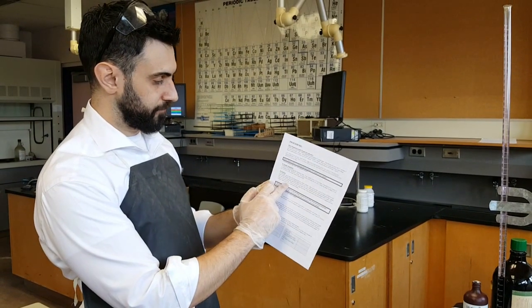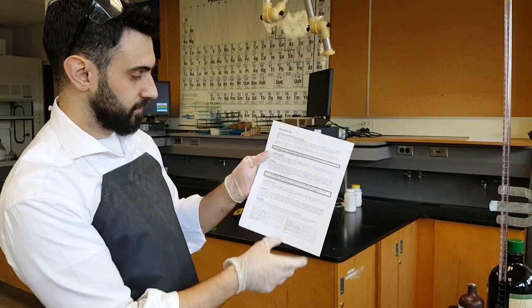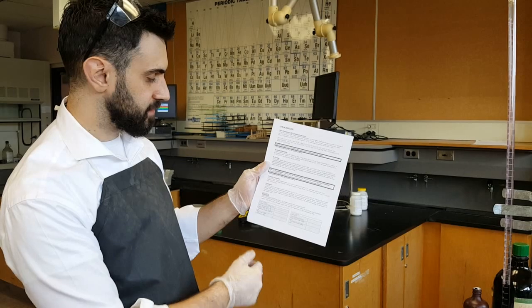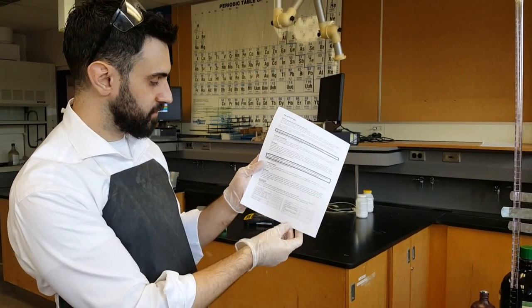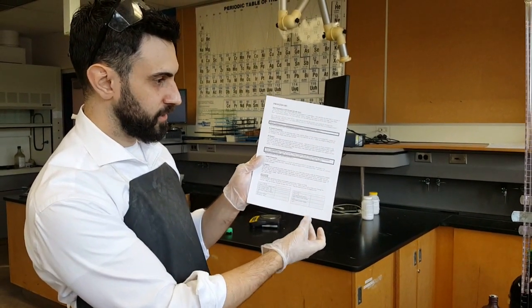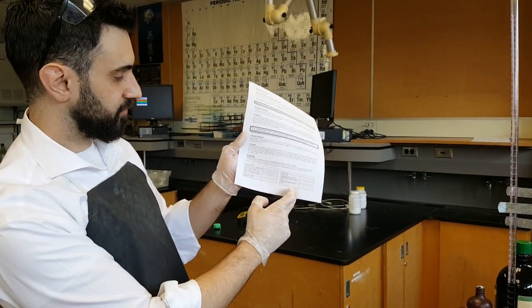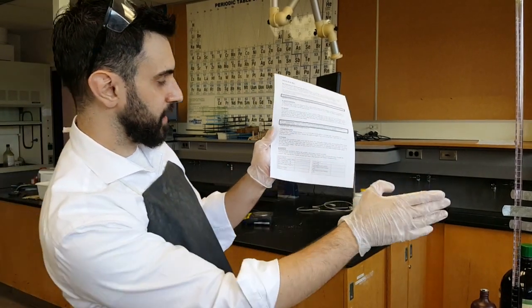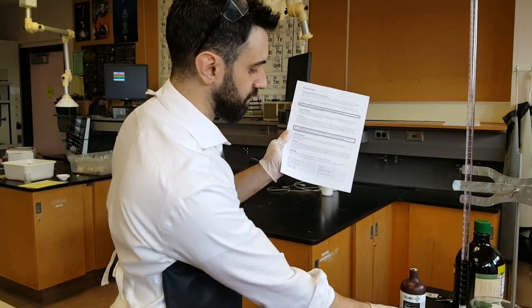So basically we follow the instructions here and we do the same thing for part A and again we'll get our initial and final volume of the permanganate that we added and we add all these parts to our data chart. And then we will be able to get our, from part A we'll get the concentration of permanganate and then from part B using the concentration that we got from part A we can find the moles of permanganate that reacted with the moles of peroxide and then from there we can do the necessary calculations.